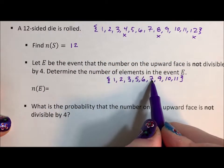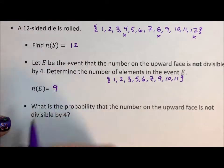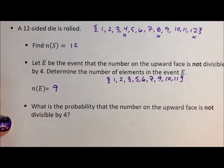So 1, 2, 3, 4, 5, 6, 7, 8, 9. Number of elements is 9. So what is the probability that the number on the upward face is not divisible by 4?